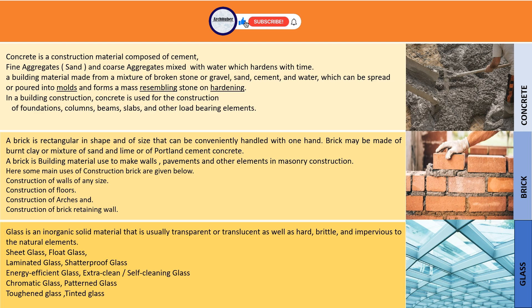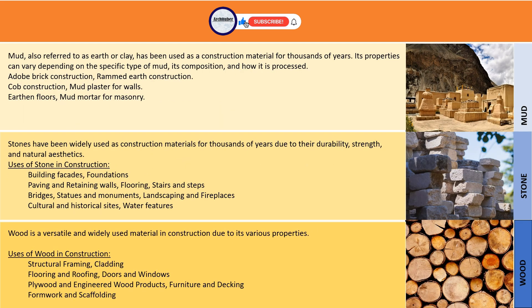We also have concrete, brick, and glass — likewise you have to take notes. You can make categories for each material covering: the material name, properties, uses, and even a picture. Then we have natural materials like mud, stone, and wood — again with uses and definitions provided for each.